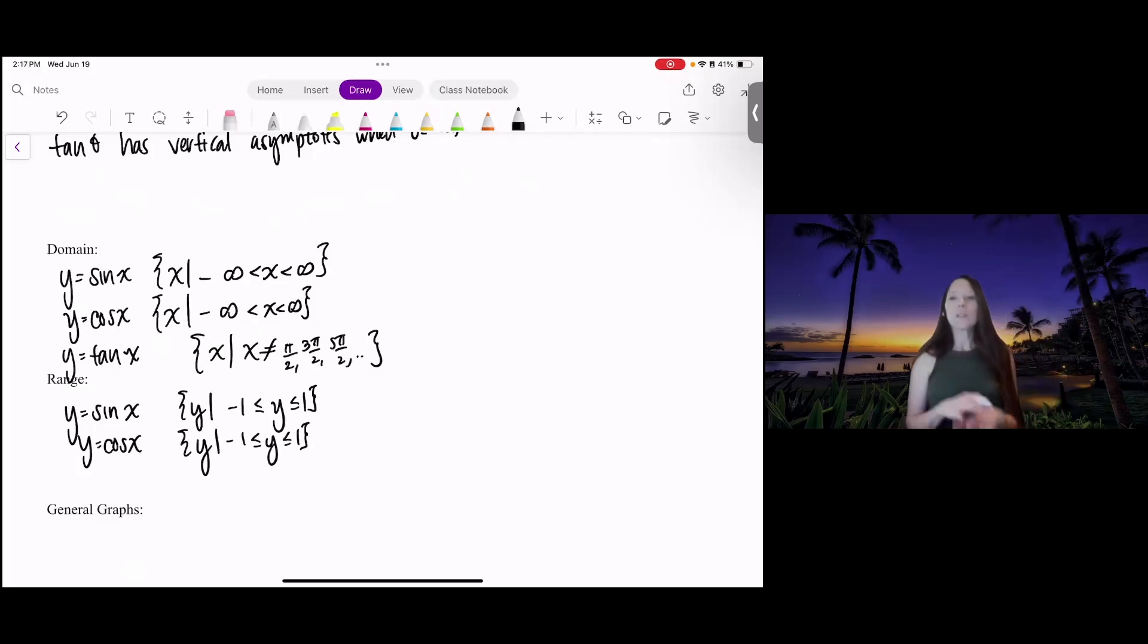We haven't really explored tangent very much. You've only seen a few of the values. You've seen pi over 6, pi over 3, and pi over 4. But tangent, as you get closer to the pi over 2 value or negative pi over 2, is actually going towards infinity and negative infinity.